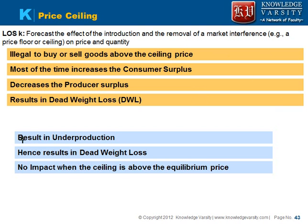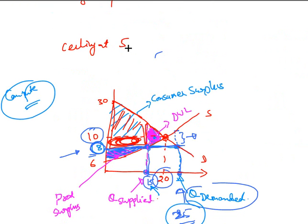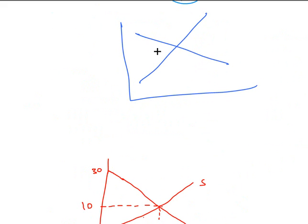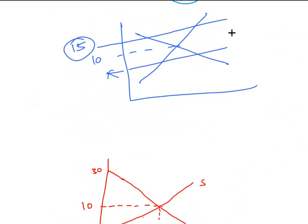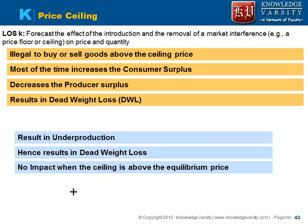To recap: a price ceiling results in under-production and a dead weight loss. Now think about it — if I put a price ceiling above the equilibrium price, say at 15, when the equilibrium price is 10, will it have any impact? Because the equilibrium price is 10, people will trade at 10. Nobody will trade at 15. The government is saying you cannot ask for more than 15, but you can ask less, which is 10. So there is no impact when the ceiling is above the equilibrium price.